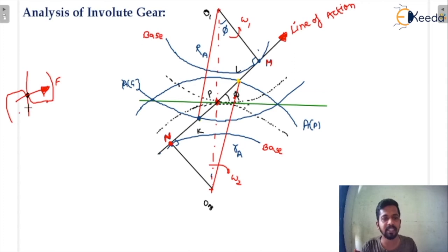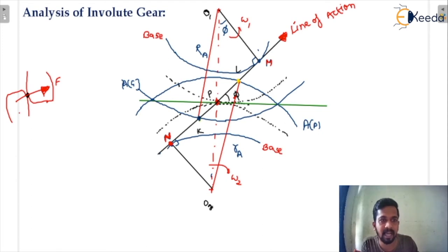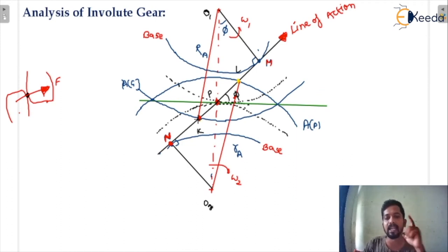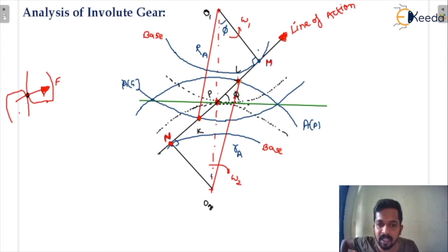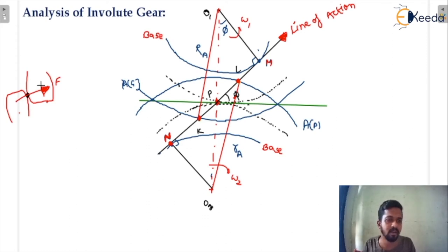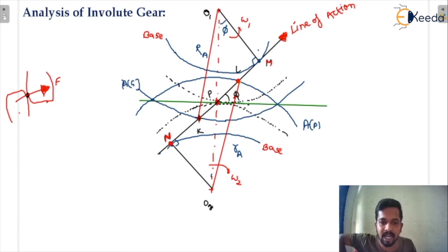When there is a start of engagement between mating gears, I will consider the first point of contact as K — that is the start of the engagement period. At the end of the engagement there will be a point L. So from K to L is the full engagement period.